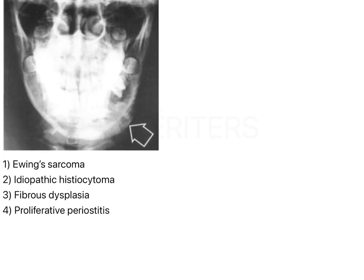The options are Ewing sarcoma, idiopathic histiocytoma, fibrous dysplasia, and proliferative periosteitis. Proliferative periosteitis means inflammation of the periosteum. If there was inflammation, there would have been caries or tooth destruction visible in the PA radiograph, or the chief complaint would have been pain. Since no pain is mentioned, proliferative periosteitis can be ruled out.